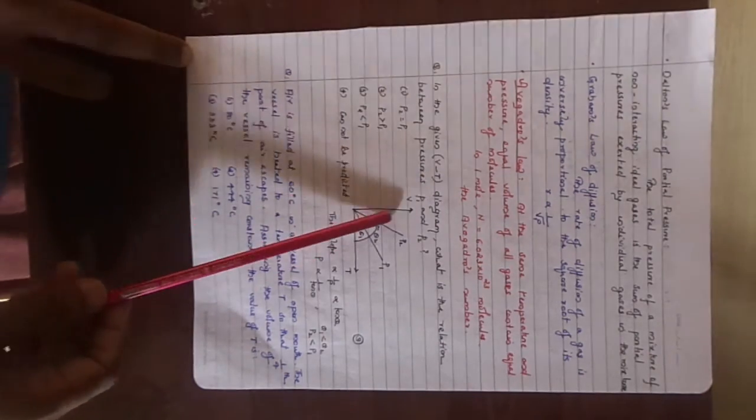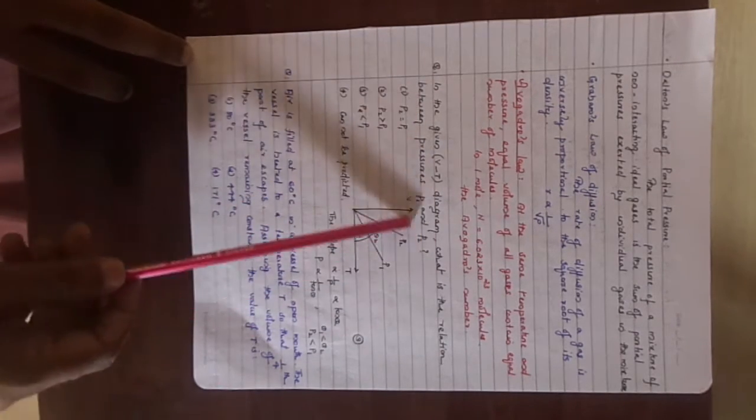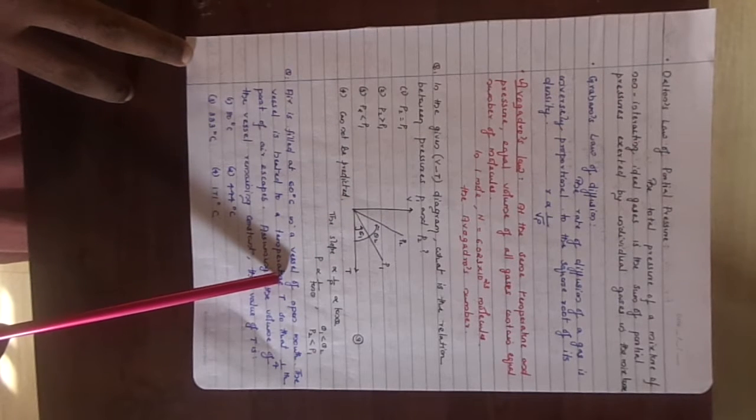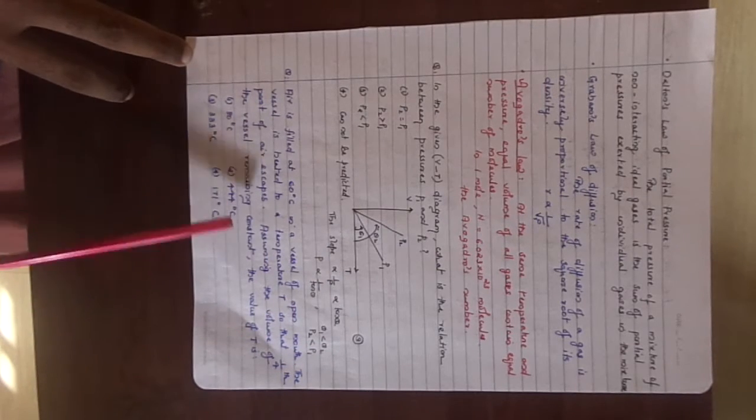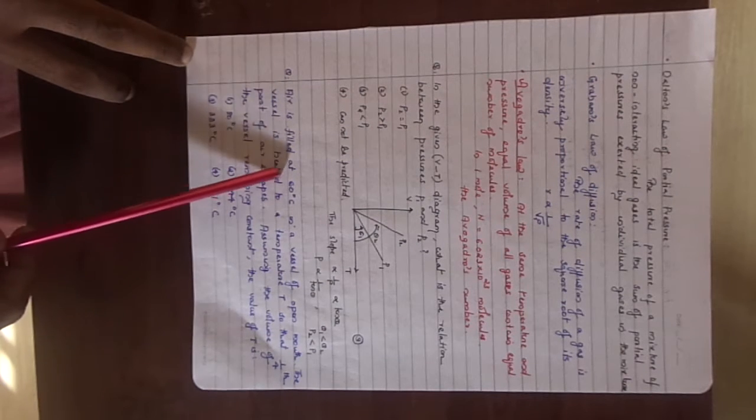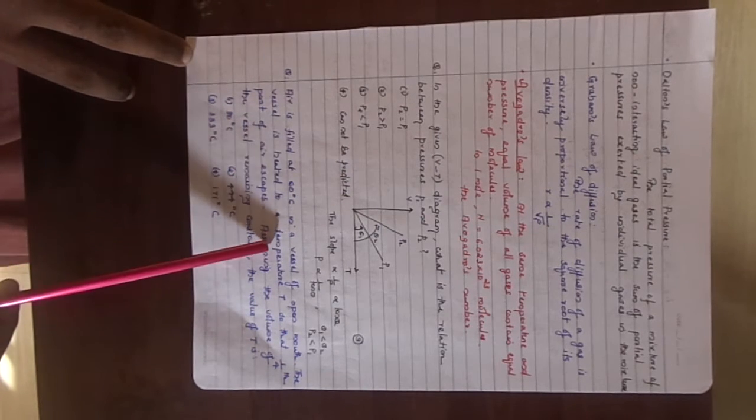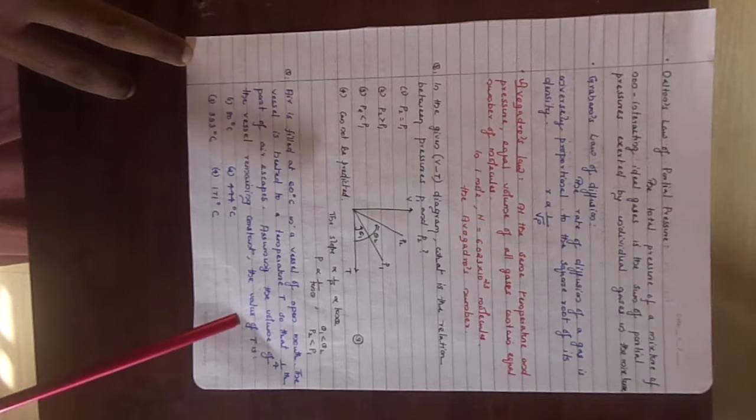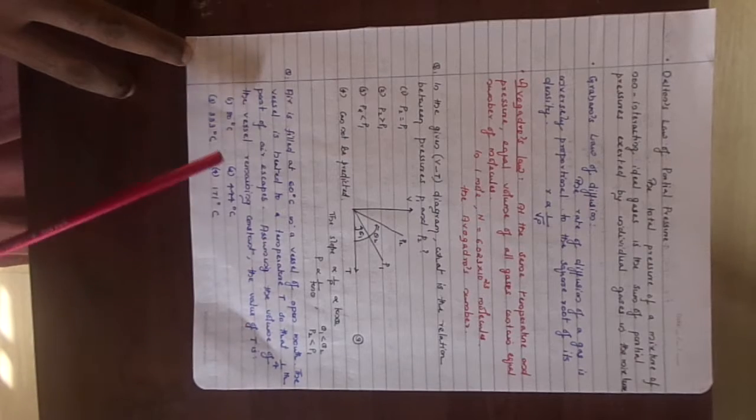Some previous year questions are waiting. In the given P-V temperature diagram, what is the relation between the pressures P1 and P2? You look, take the slope. Slope is proportional to the tan theta. So the pressure is proportional to 1 by tan theta. So you get the answer. And here another problem. Air is filled at 60 degrees Celsius in a vessel of open mouth. The vessel is heated to a temperature capital T so that 1 by 4th part of air escapes, assuming the volume of the vessel remaining constant. The value of T is?